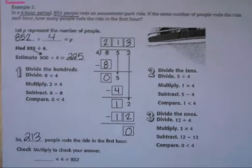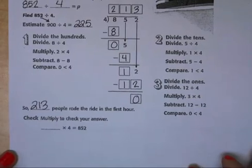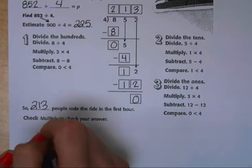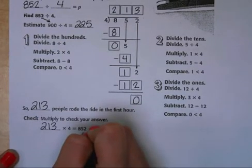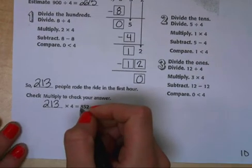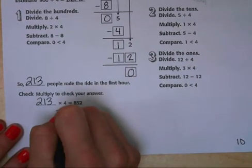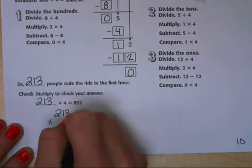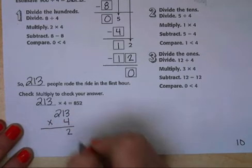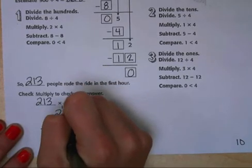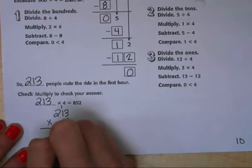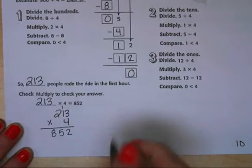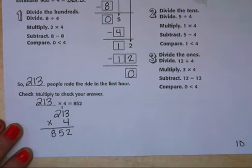Now we can check our answer using multiplication. So we have 213 times 4, that should give us 852. Let's go ahead and double check. 4 times 3 is 12, carry the 1. 4 times 1 is 4, plus 1 is 5. 4 times 2 is 8. We get 852, so we know that we did the division problem correctly.